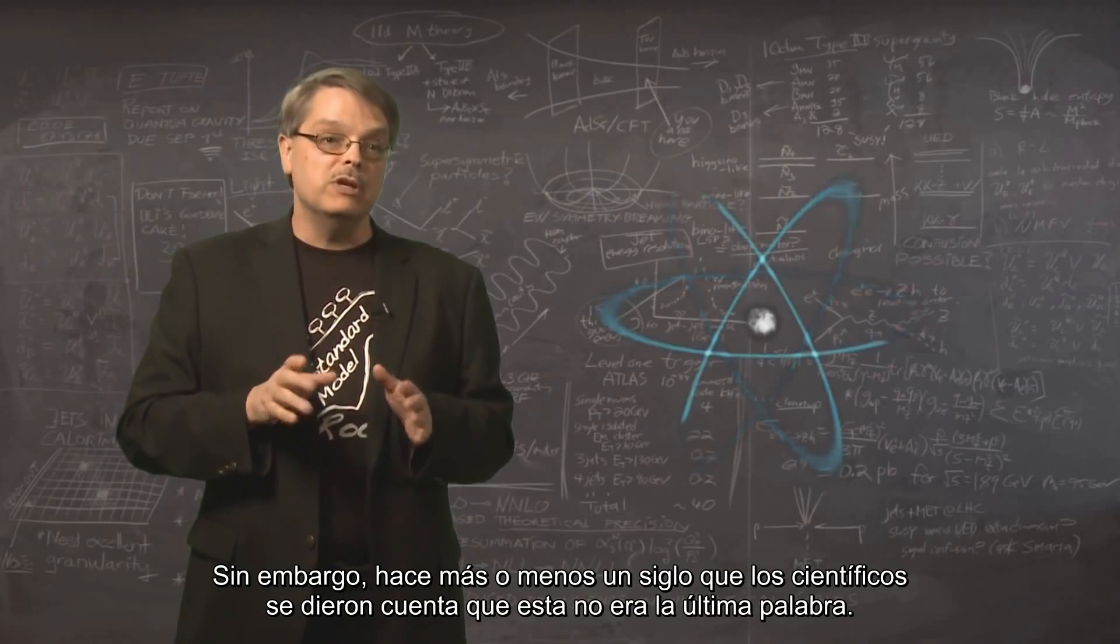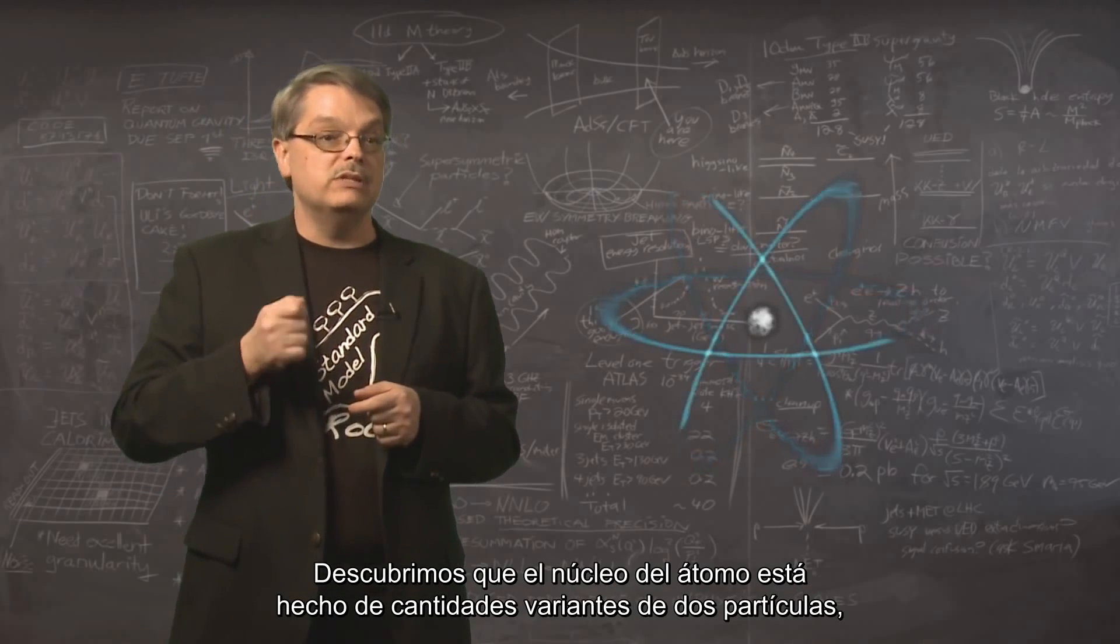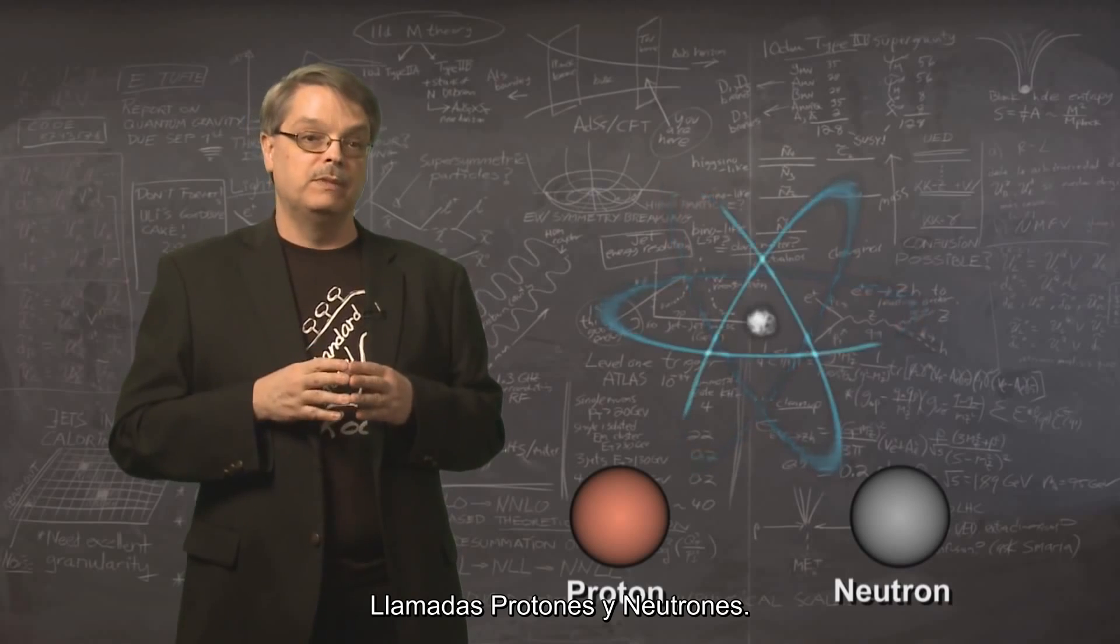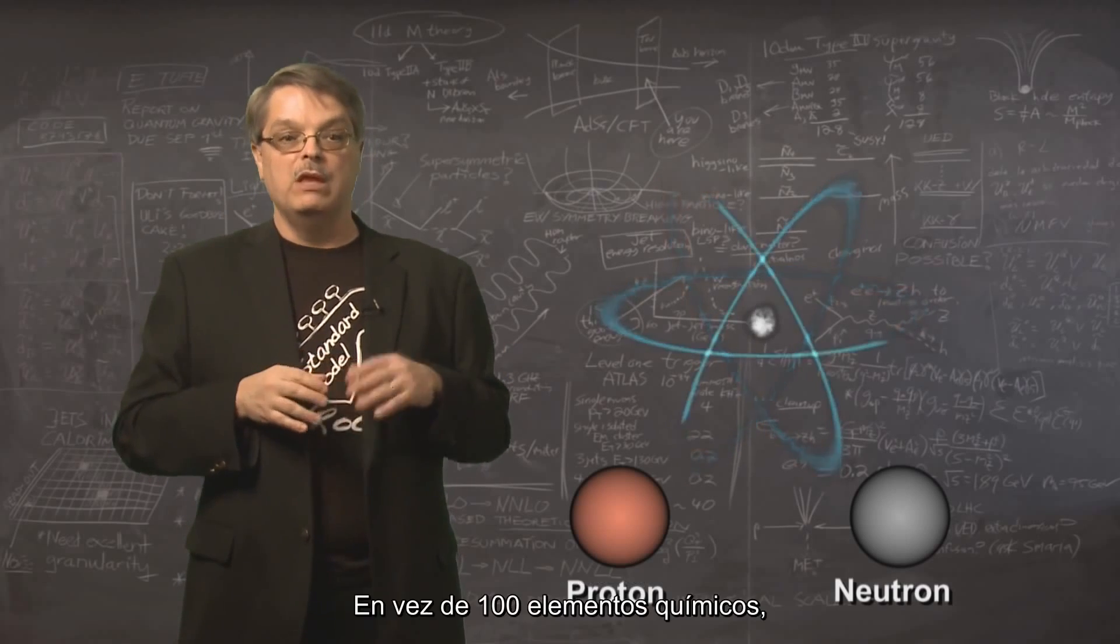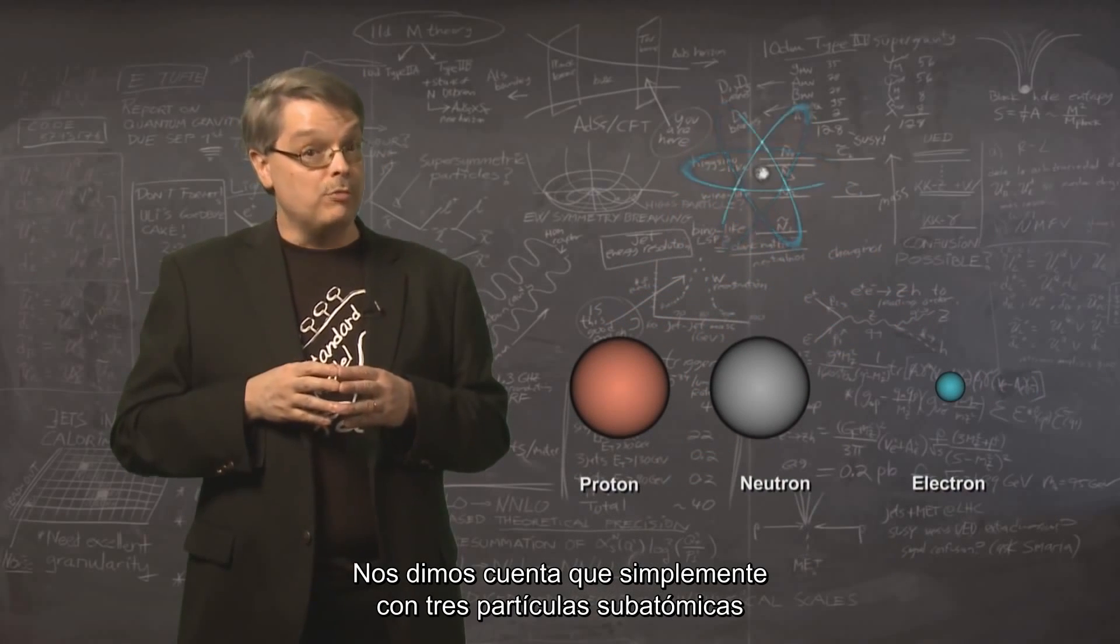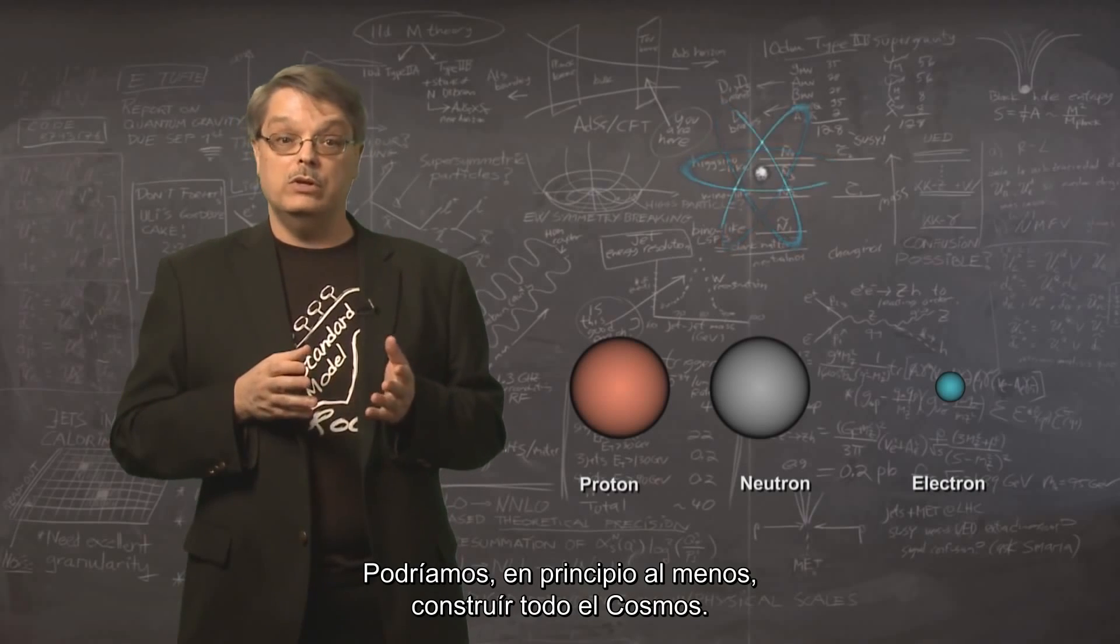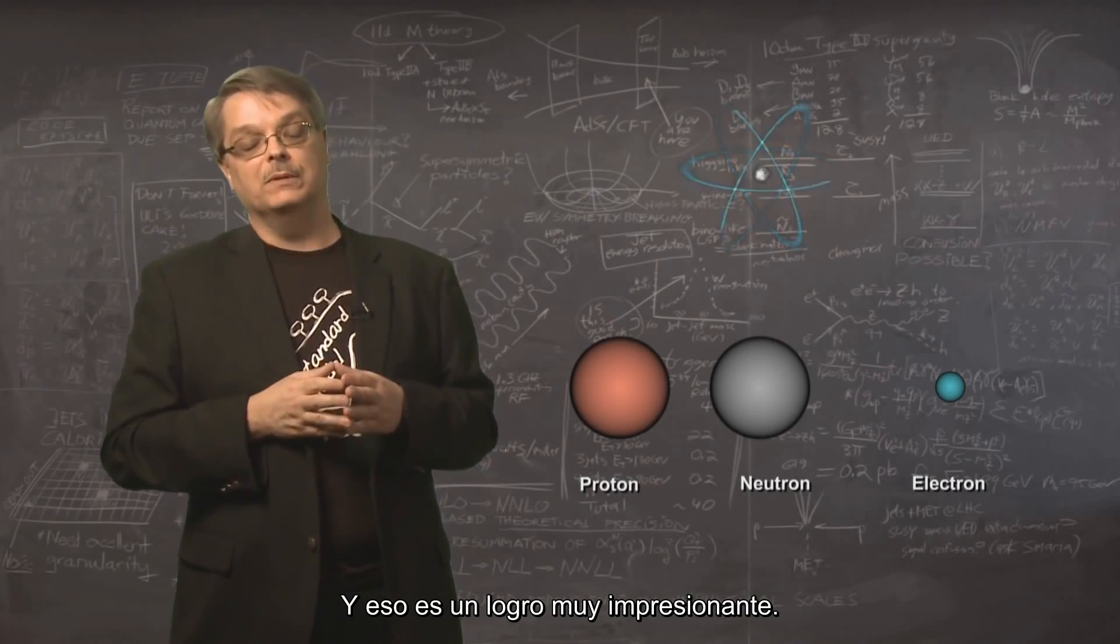However, nearly a century ago, physicists realized that this wasn't the final word. We discovered that the nucleus of the atom was made of varying numbers of two particles called protons and neutrons. This was a substantial simplification in our understanding of the universe. Rather than 100 chemical elements, we now realized that with a mere three subatomic particles called protons, neutrons, and electrons, we could, in principle at least, construct an entire cosmos. And that is a pretty impressive achievement.